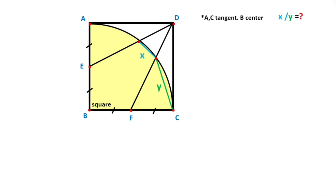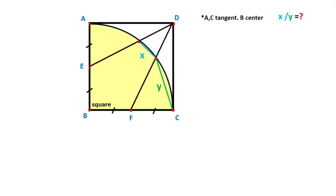Hello everyone. In this video we have one quarter circle, one square, and point B is given as the center of the quarter circle. Points A and C are given as tangent points. Points E and F are given as midpoints. The question is: what is the ratio of X and Y?